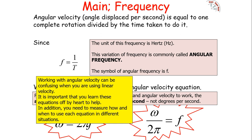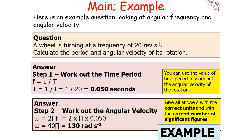Here's an example on angular frequency and angular velocity. A wheel turns at a frequency of 20 revolutions per second. Calculate the period and angular velocity. Time period T = 1/f = 1/20 = 0.050 seconds (2 significant figures). For angular velocity: omega = 2πf = 2π × 20 = 130 radians per second (to 2 significant figures). Do not leave your answer as 40π, as that implies infinite precision.